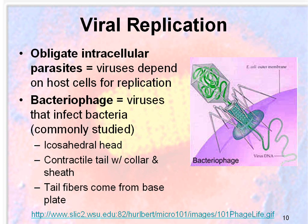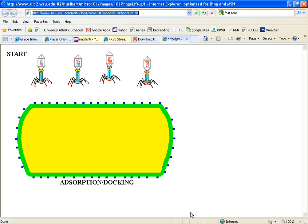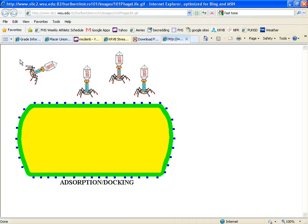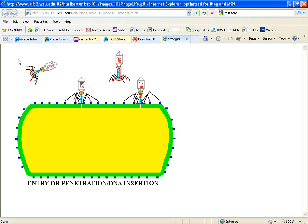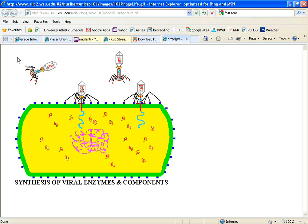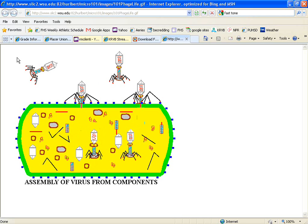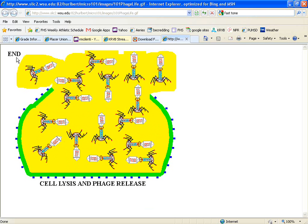A bacteriophage is a virus that infects bacteria. They're really commonly studied because they're kind of easy to deal with. They have an icosahedral head, a contractile tail with a collar and sheath that protects it, and tail fibers that come from their base plate. Here you see some bacteriophages docking and inserting their DNA into a host cell, and then their enzymes and components are synthesized and assembled spontaneously inside the bacteria.